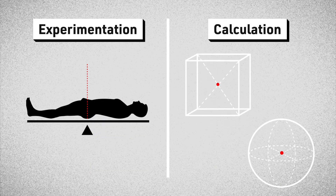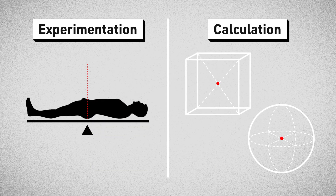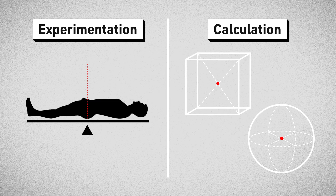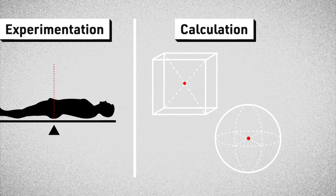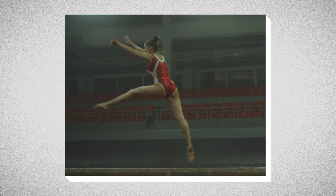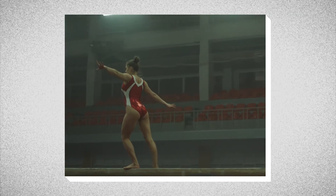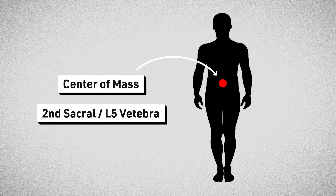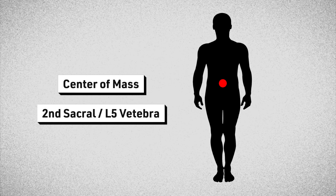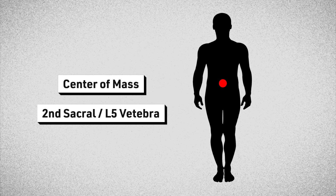Whether you find it by experimentation or calculation, in the human body, the exact location of the center of mass depends on where the segments of our body are in space. That means the center of mass moves around as we move. But generally, when in a standing position, the center of mass is found just below the belly button — that is, around the second sacral, or L5 vertebra.